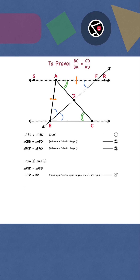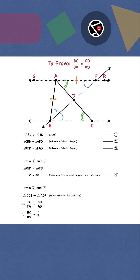From statements 2 and 3, triangle CDB is similar to triangle ADF. Since corresponding sides of similar triangles are proportional, and FA equals BA, therefore BC by BA equals CD by AD.